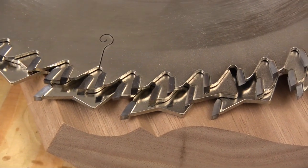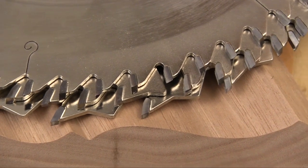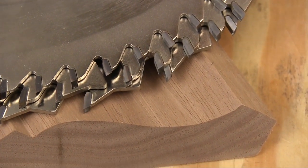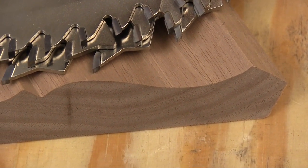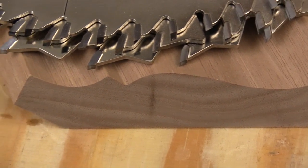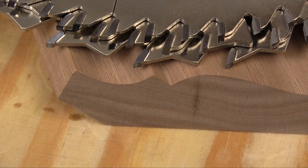Infinity uses micro grain carbides for making their teeth. That lets these teeth take a sharper edge initially but then hold it much longer. And that helps the Infinity blades to make very clean cuts.